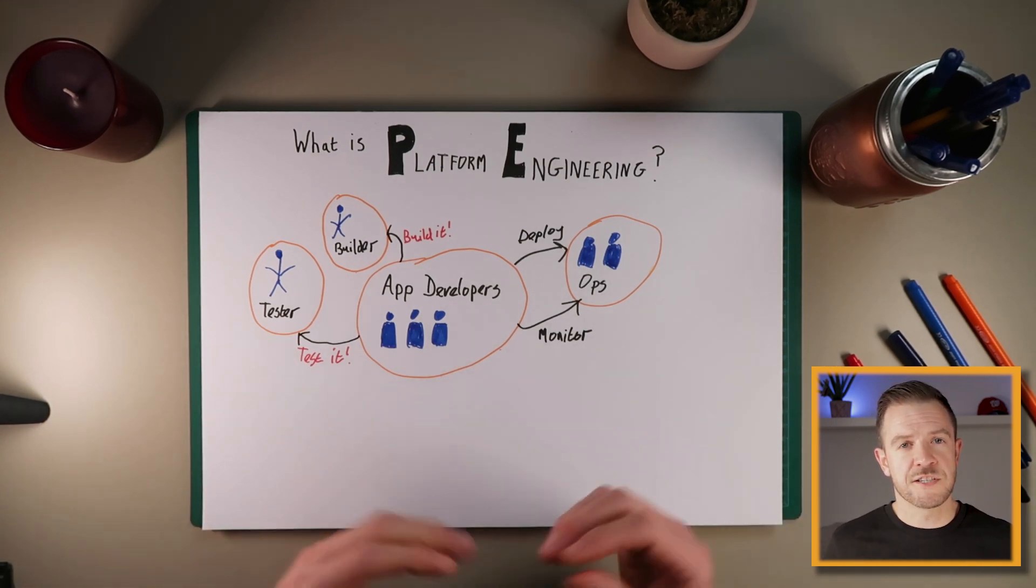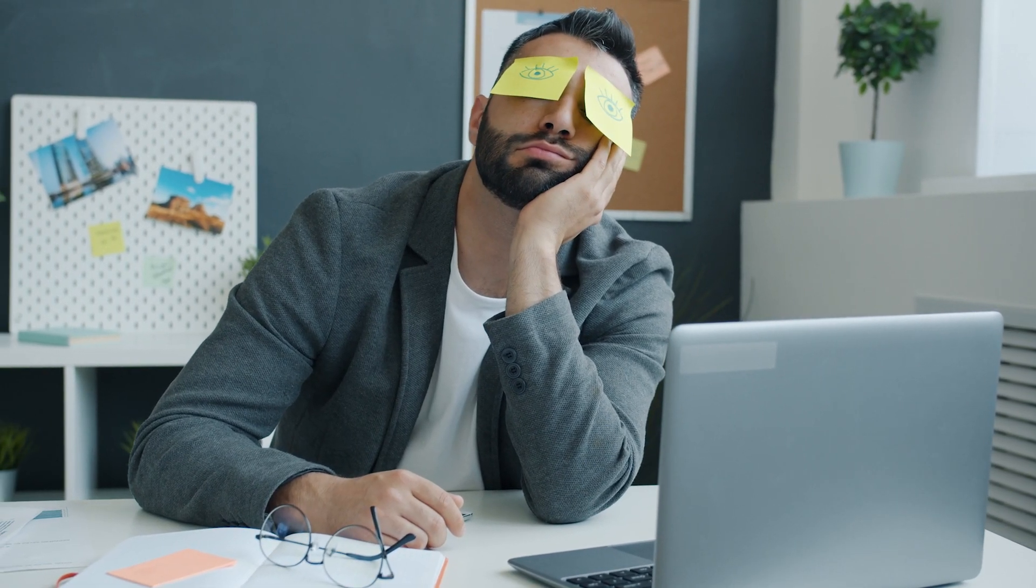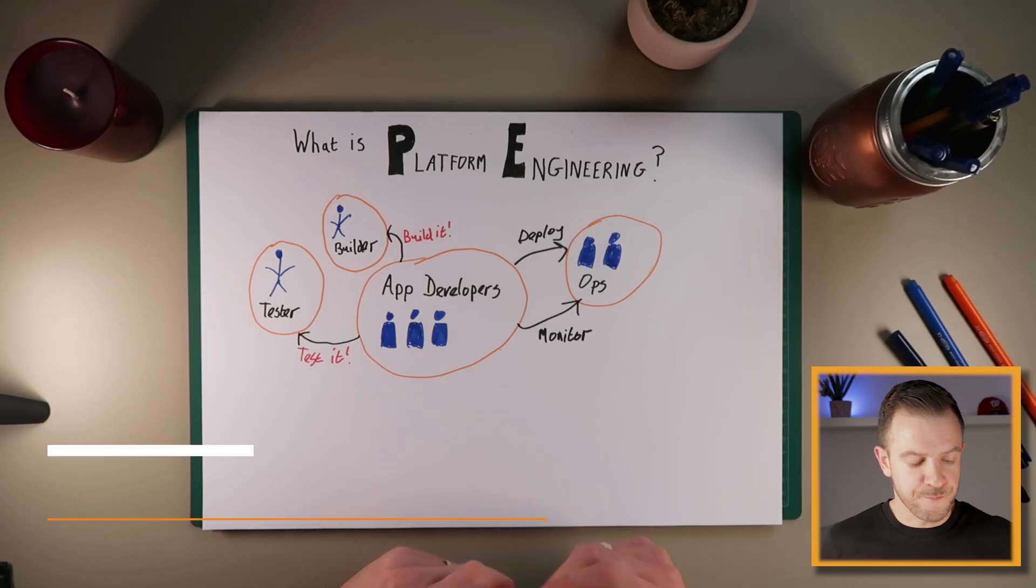And truth be told, this was a lot simpler time in software engineering. The problem was that it was incredibly inefficient. Software would take ages to develop. You'd often only find bugs, for example, later on in the lifecycle because the testers weren't in the team. It would take ages to build an application. And then, because you had a separate ops team deploying it, running it in production would often be a bit of a nightmare as well. So what did we do?